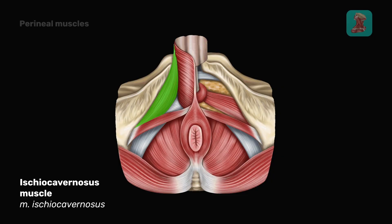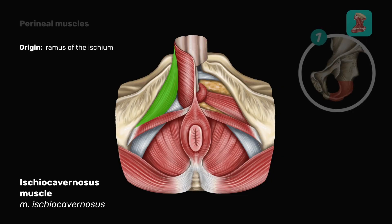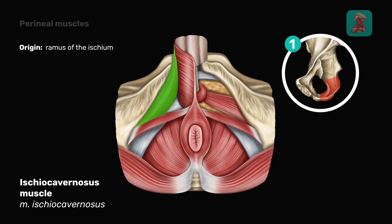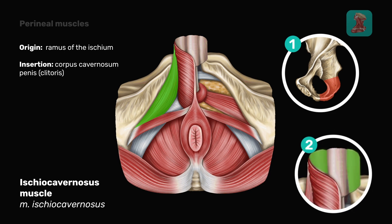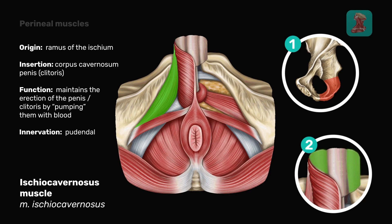The ischiocavernosis muscle originates from the ramus of the ischium and inserts into the corpus cavernosum of the penis or the clitoris. It maintains the erection of the penis or clitoris by pumping them with blood.